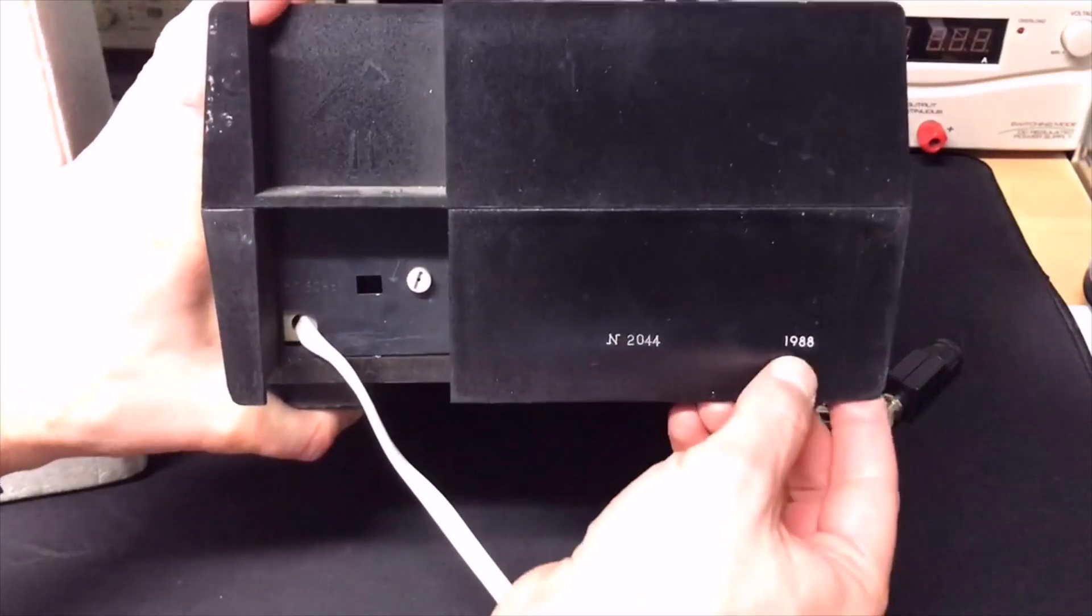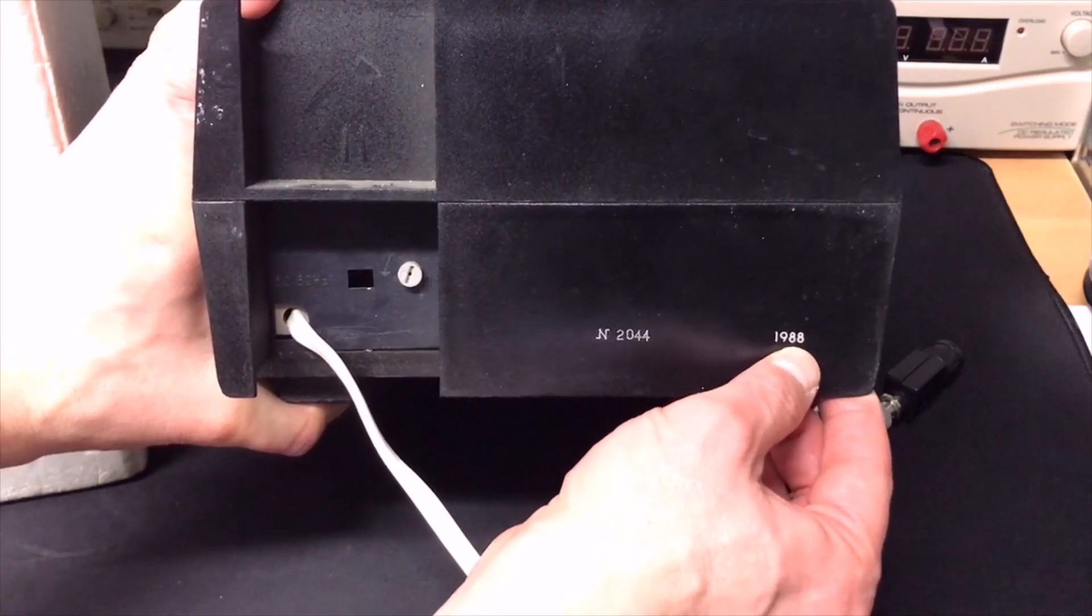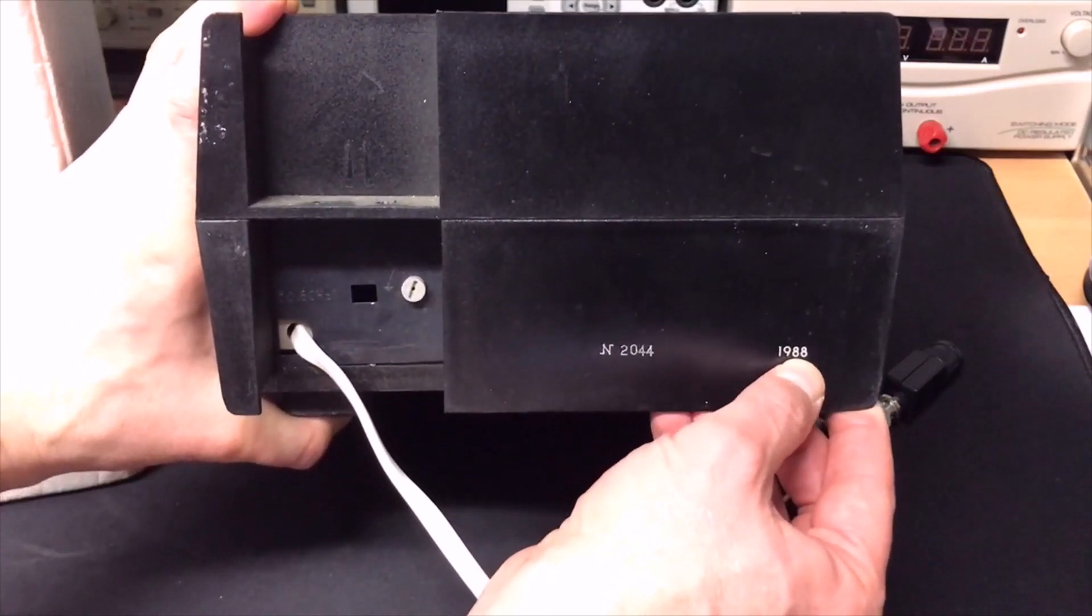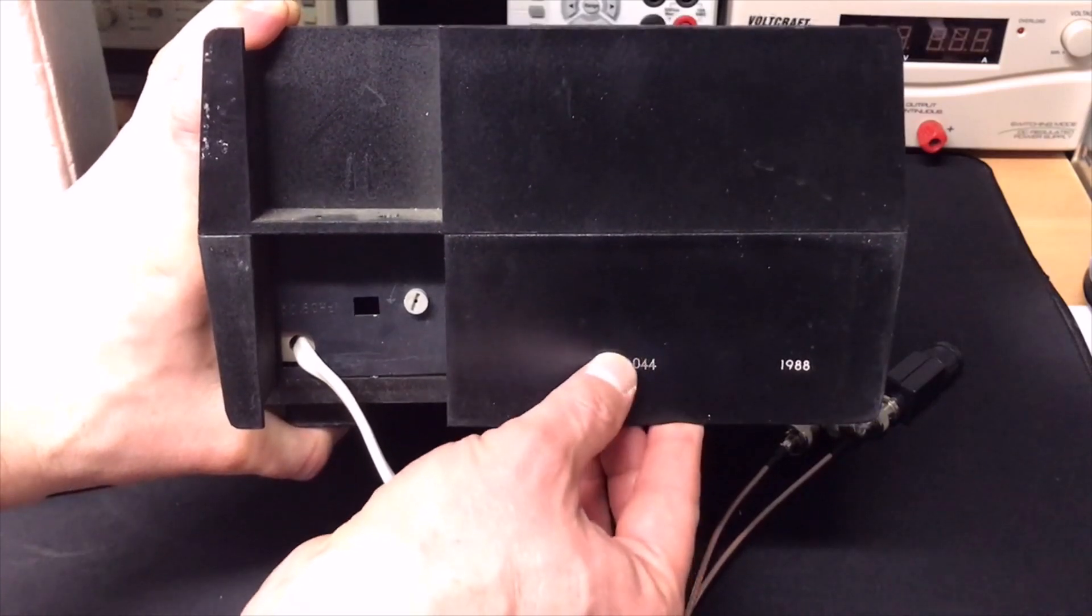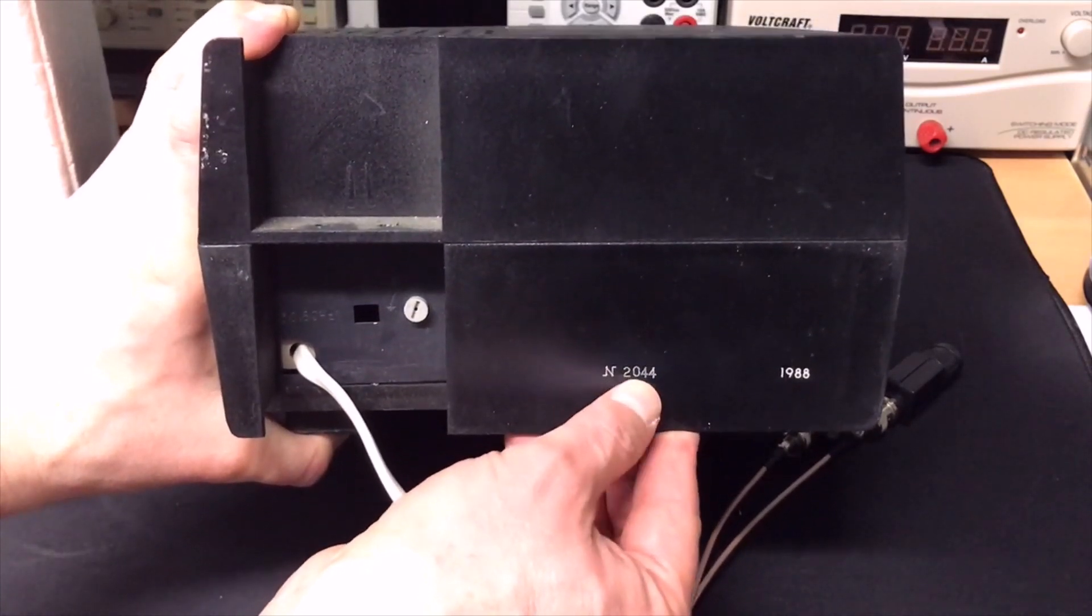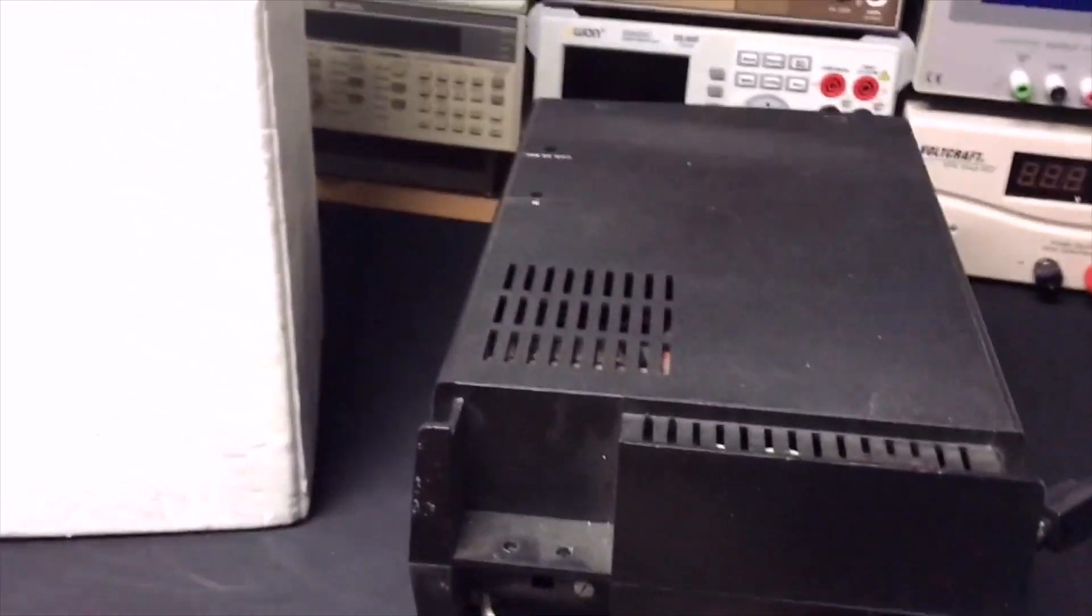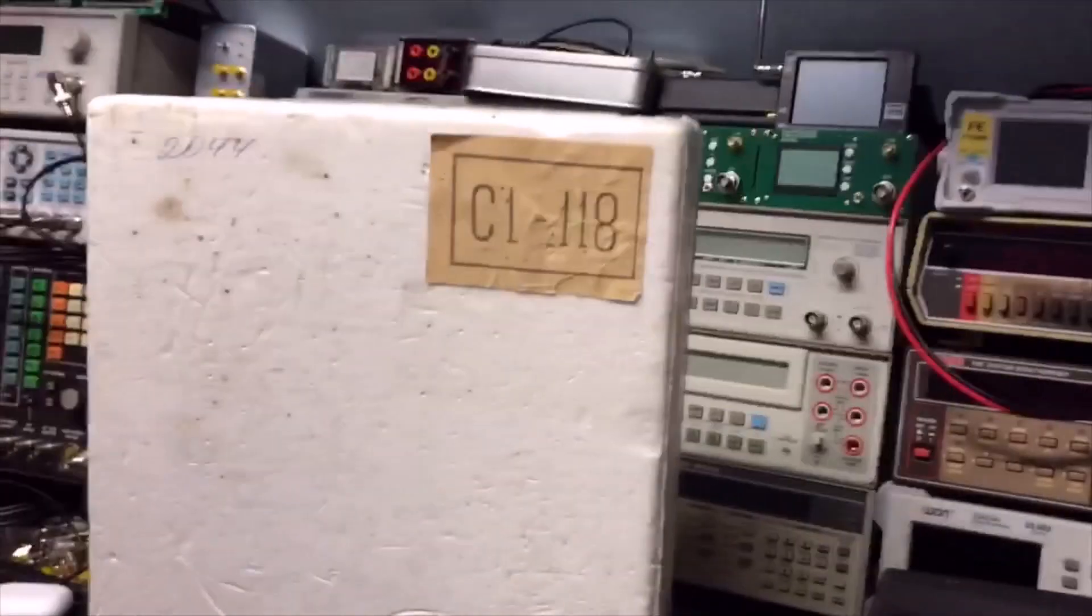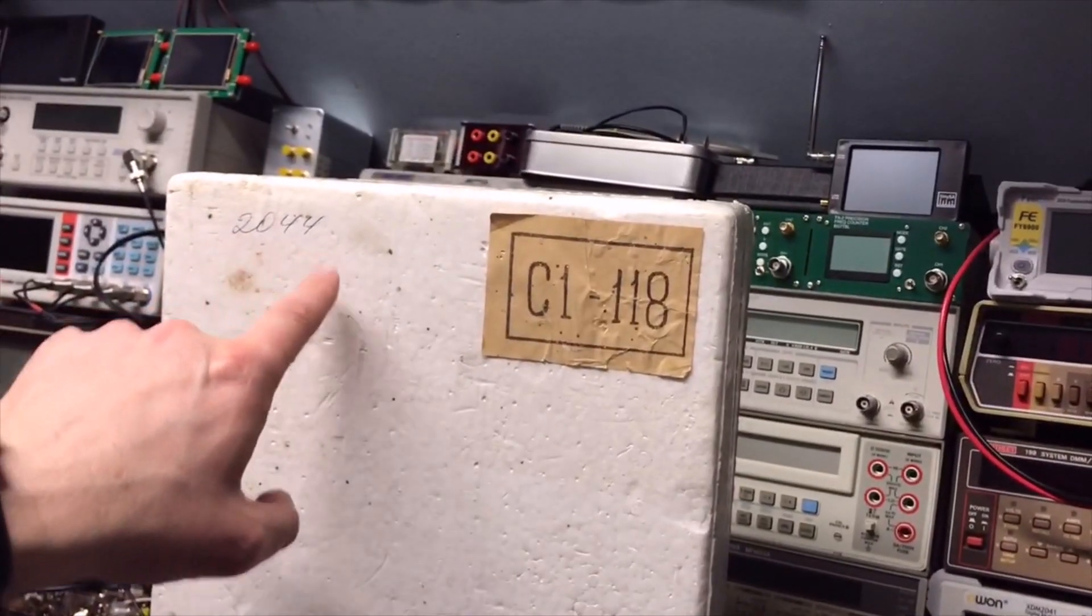And if we look at the back, now this question is answered, it's 1988. After 1988, they made the 20 megahertz version. And this is very nice, because now we know it's really the original box. This one says 2044, it's the serial number. Now look at the box. And I'm not the one who did this, the 2044.